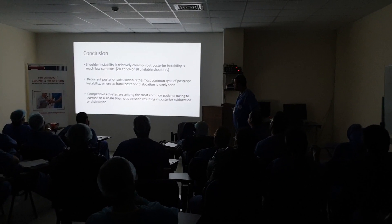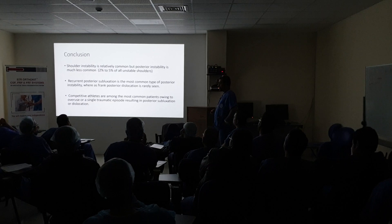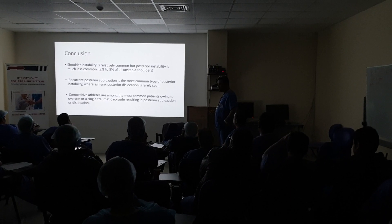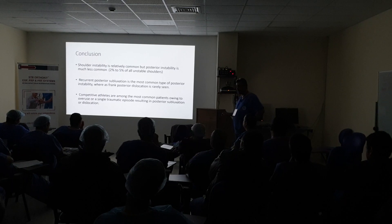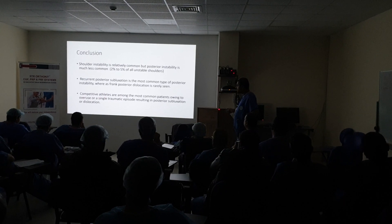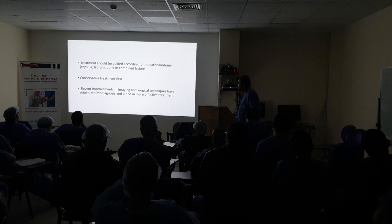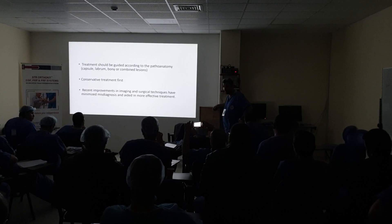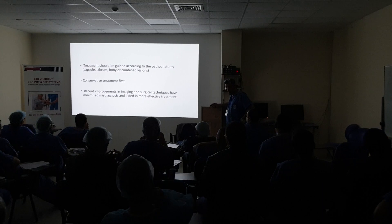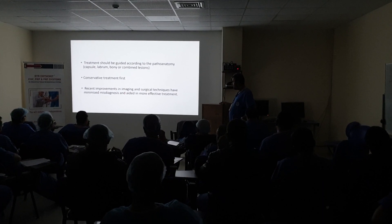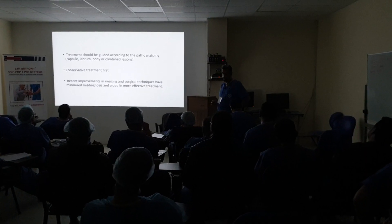In conclusion: shoulder instability is relatively common, but posterior instability is much less common, accounting for only 2 to 5% of all shoulder instability. Recurrent posterior subluxation is the most common type of posterior instability, rather than frank dislocation. Competitive athletes — weighted or overhead athletes — are more prone to this type of instability. Treatment should be guided according to the pathology: capsular, labral, or bony problem. Conservative treatment first. Recent improvements in imaging and surgical techniques have minimized misdiagnosis and aided in more effective treatment. Thank you.